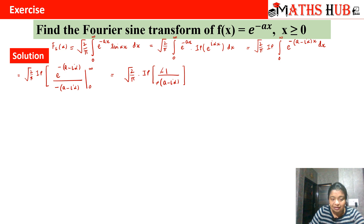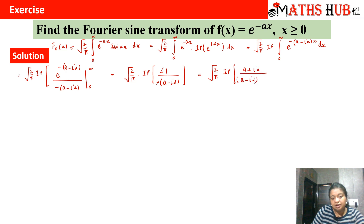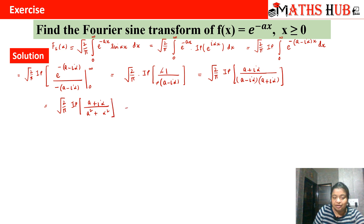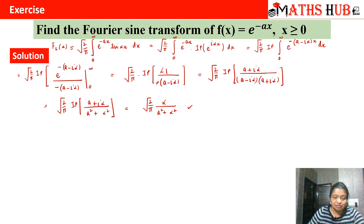So we get √(2/π) × Im[ 1/(a − iα) ]. The minus signs cancel, and we rationalize the denominator by multiplying by the conjugate (a + iα). The denominator becomes a² + α². Taking the imaginary part of (a + iα)/(a² + α²) gives α/(a² + α²). So the Fourier sine transform of e^(−ax) is √(2/π) × α/(a² + α²).